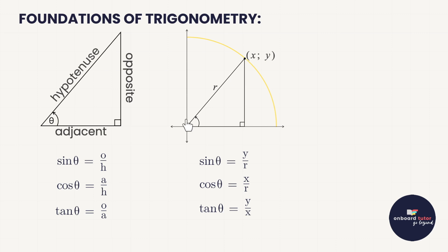We then took this knowledge onto the Cartesian plane, where we can translate opposite, adjacent, and hypotenuse into x-coordinates, y-coordinates, and radial lengths. It came from the foundation of a circle — we could draw a radius at any given angle with a specific length. So on the Cartesian plane, sine θ = y/r, cos θ = x/r, and tan θ = y/x.